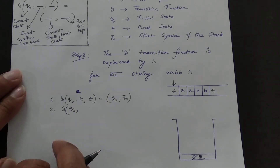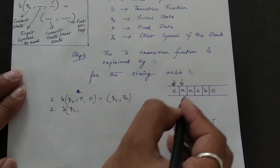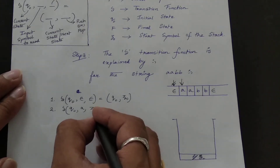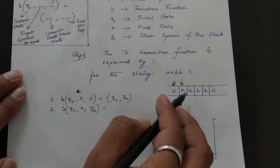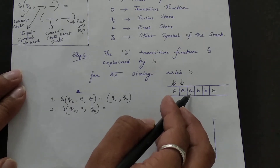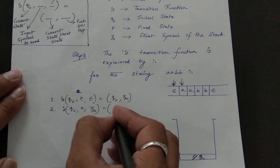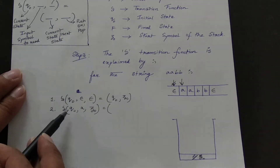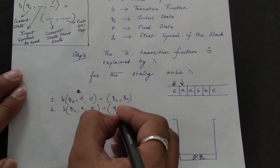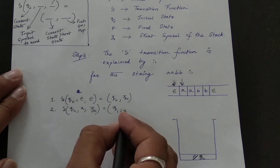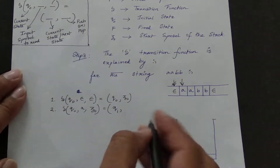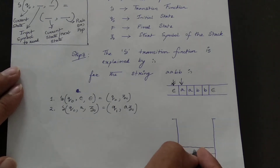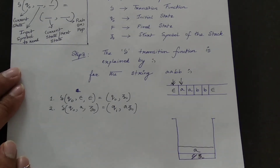Step 2: Delta(q0, a, Z0) = (q1, aZ0). The current state is q0, the next input symbol to read is 'a', and the top of the stack is Z0. Since the input symbol changes, the state changes to q1. We push 'a' onto the stack, so the stack now contains 'aZ0'.